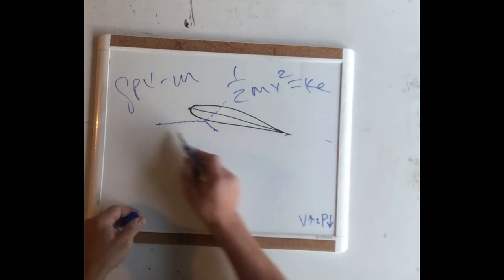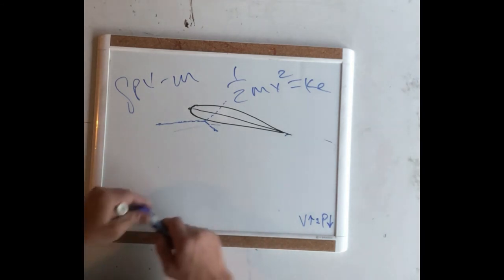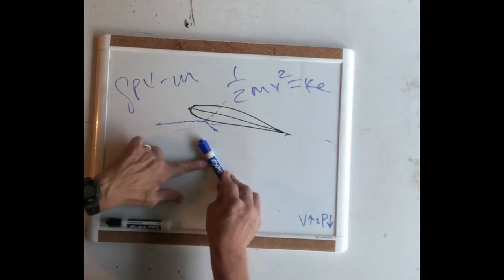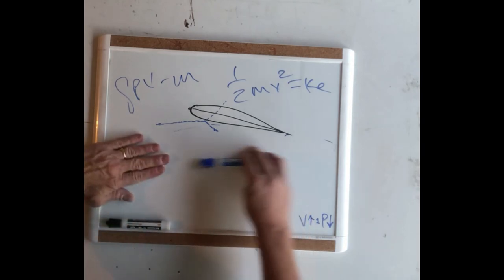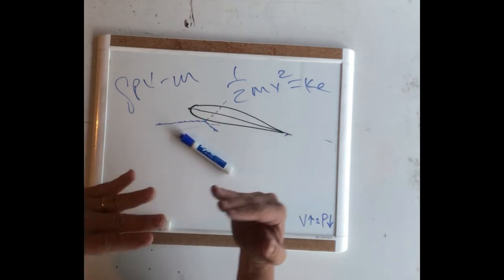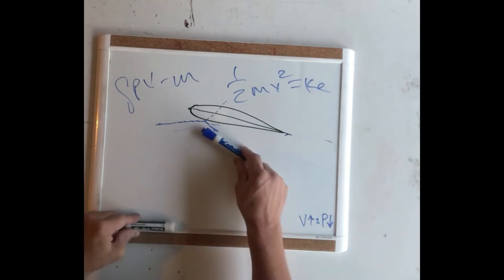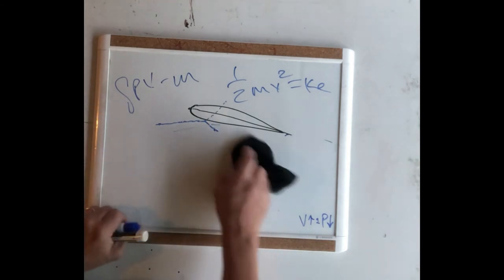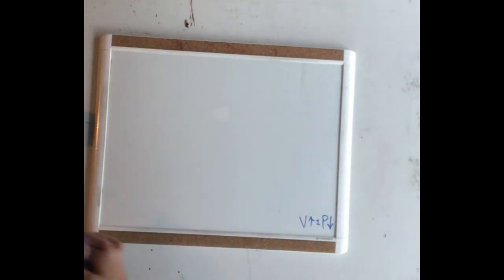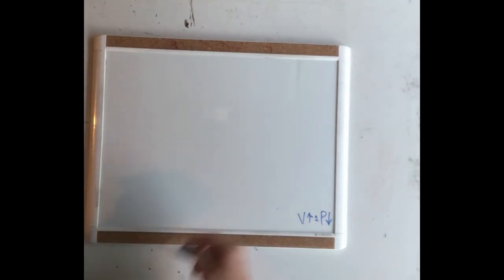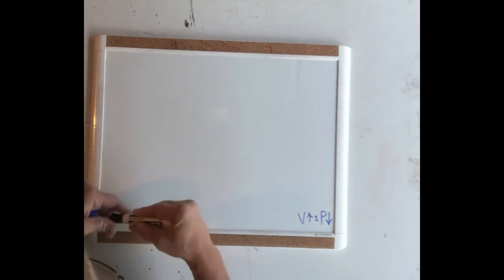The more we increase the angle of attack, the more directly those air molecules impact the bottom of the wing. If the wing is perfectly aligned into the wind with zero angle of attack, the bottom of the wing is not exposed to the airflow and there's no impact. But increase the angle of attack and now the airflow strikes the bottom of the wing, providing lift. Almost all airplanes — asymmetrical or symmetrical airfoil — fly at some angle of attack.